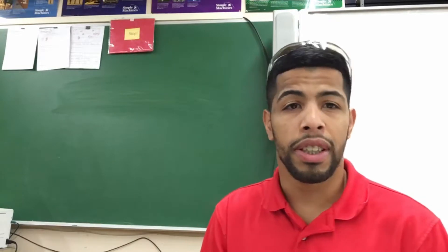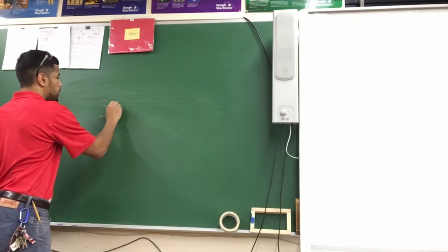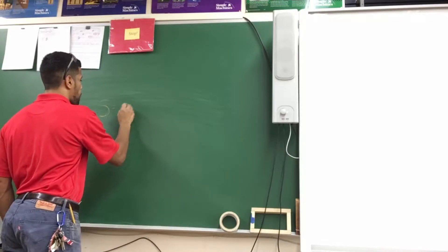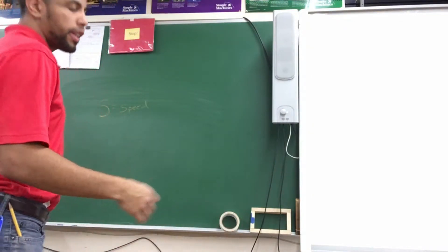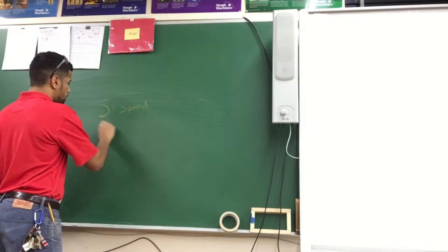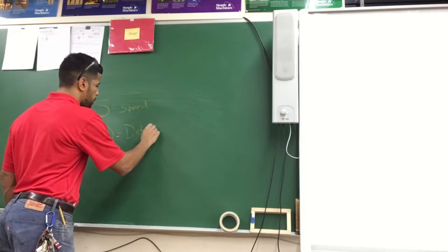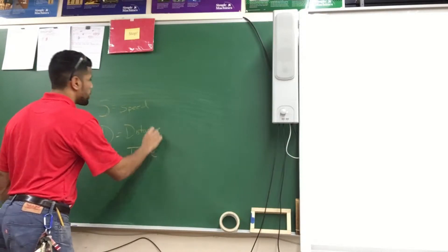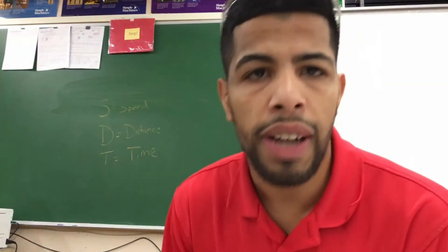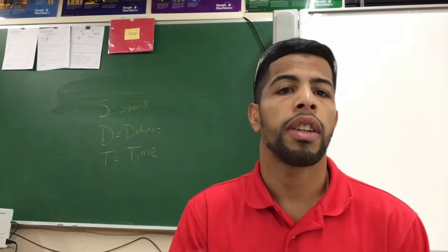So let's talk about the actual formula. The formula you will use today is s = d × t, where s stands for speed, d equals distance, and t is equal to time. With those now identified, we can use them to actually calculate our speed when we get into the activity.